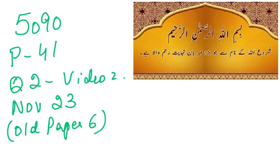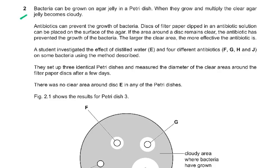This is November 23 Paper 4, Question 2. Bacteria can be grown on agar jelly in a petri dish. When they grow and multiply, the clear agar jelly becomes cloudy because of the growth of the bacteria. Antibiotics can prevent the growth of bacteria. Discs of filter paper dipped in an antibiotic solution can be placed on the surface of the agar. If the area around a disc remains clear, the antibiotic has prevented the growth of the bacteria.